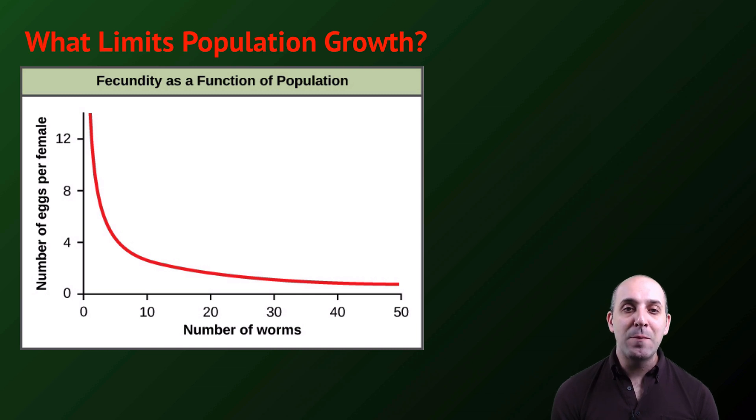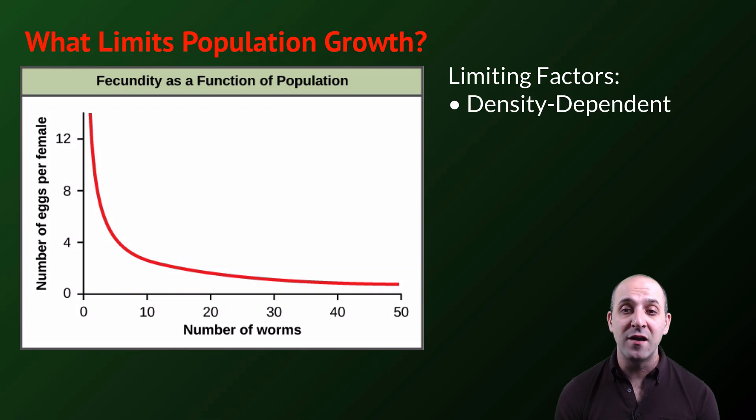When thinking about the things that limit population growth, we talk about limiting factors. Limiting factors come in two different varieties. There are density-dependent limiting factors. These are factors that exert a bigger effect as the density of the population, as the number of individuals in that particular area increases. What you can see in this graph is a density-dependent limiting factor in a population of C. elegans worms. As the number of individuals in the population increases, each individual worm produces fewer and fewer eggs. This is due to the population exhausting the various resources in this environment. Space, food, an increase in the amount of waste that they're producing. All of these things are working together to have this density-dependent limiting effect.